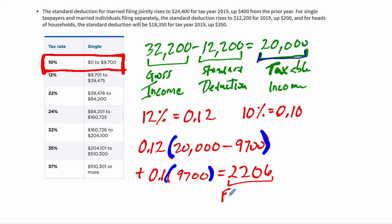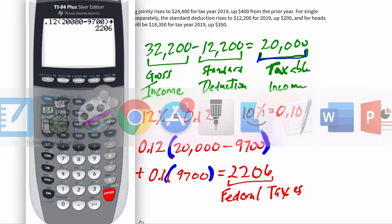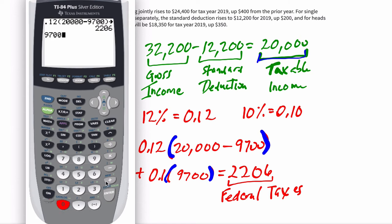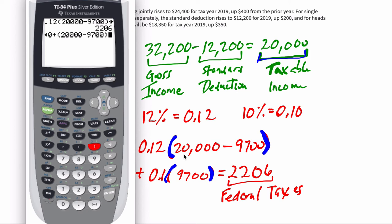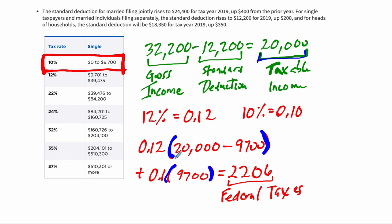These are our federal taxes. Let's verify we set up the equation correctly. We take $9,700 and pay 10% on that amount, plus 12% on the difference of $20,000 minus the $9,700 we already accounted for. If we add those two amounts, they should equal the full taxable income — and they do: $20,000. If those numbers don't add up to your taxable income, you're missing something. This 12% bracket starts right after $9,700, so every amount above $9,700 is taxed at 12%. That's our first example, and in the next video we'll look at another.